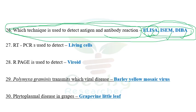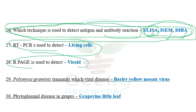The next question: RT-PCR is used to detect — among the options given, RT-PCR is used to differentiate between a living virus and a non-living virus, so RT-PCR is used to detect living cells. The next question: R-PAGE — polyacrylamide gel electrophoresis — is the technique used to detect viroids specifically. Normal PCR or other techniques cannot detect viroids in a full-fledged manner, but R-PAGE is the specific technique used to detect viroids.